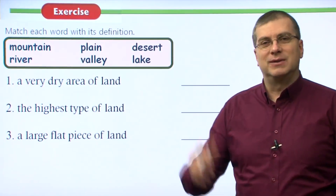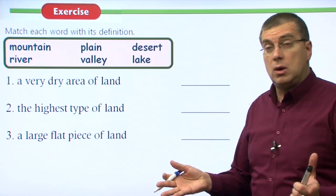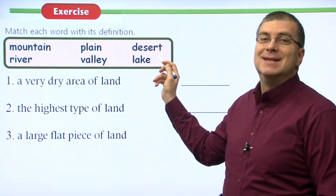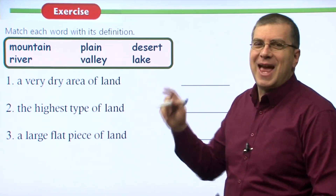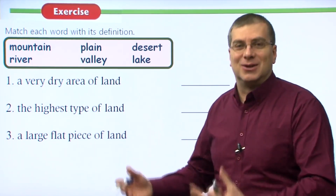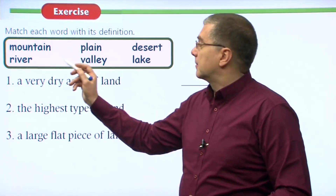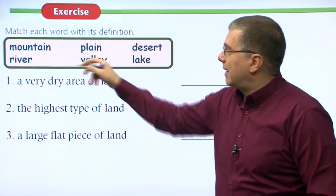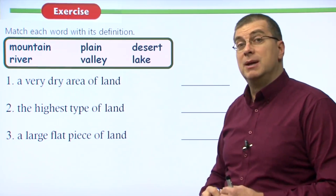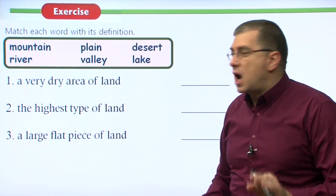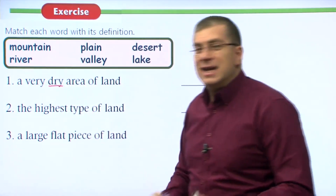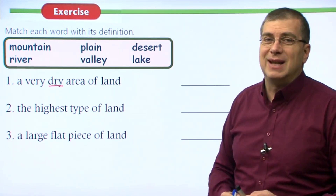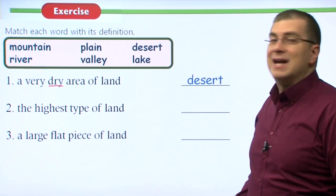Let's move on to our word matching exercise. We're going to take the words and match them to the definitions. Our words are mountain, plain, desert — not dessert with two S's, which is what you eat after dinner — river, valley, and lake. Number one: a very dry area of land. The key word here is dry — no water or very little water, and it's very difficult for plants and animals to live there. Of course, it's a desert.